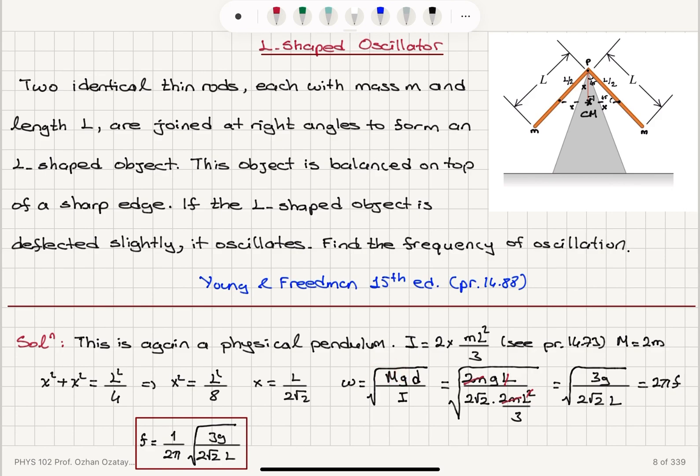I substitute for capital M, 2M, for I, 2 ML squared over 3, for D, L divided by 2 square root 2. This gives me omega, and when I divide omega by 2 pi, 1 over 2 pi, square root 3G divided by 2 square root 2 L will be the frequency of the oscillation.